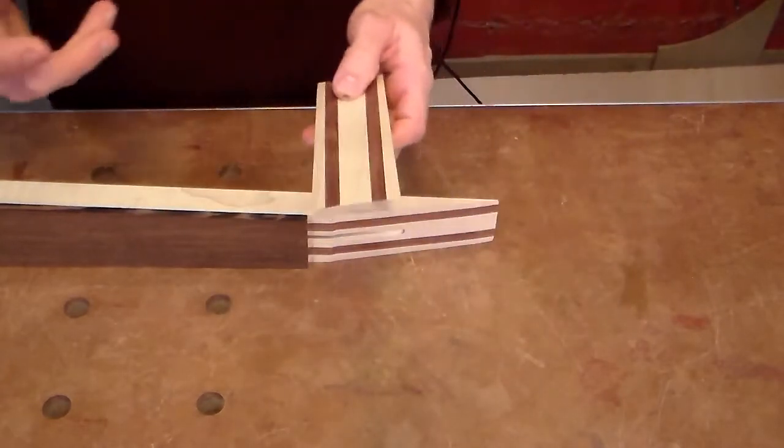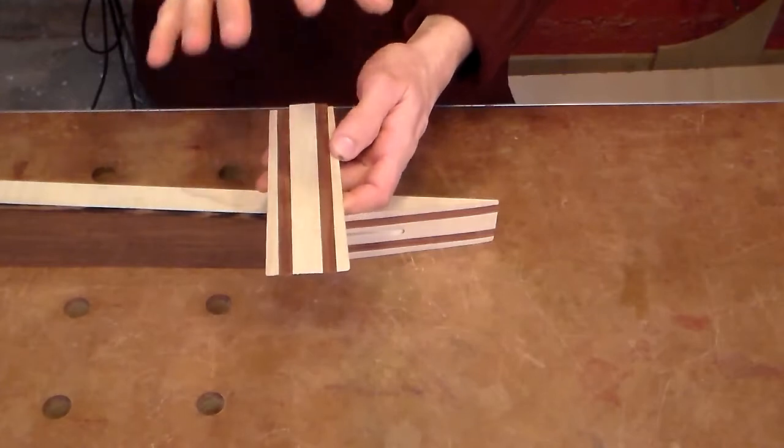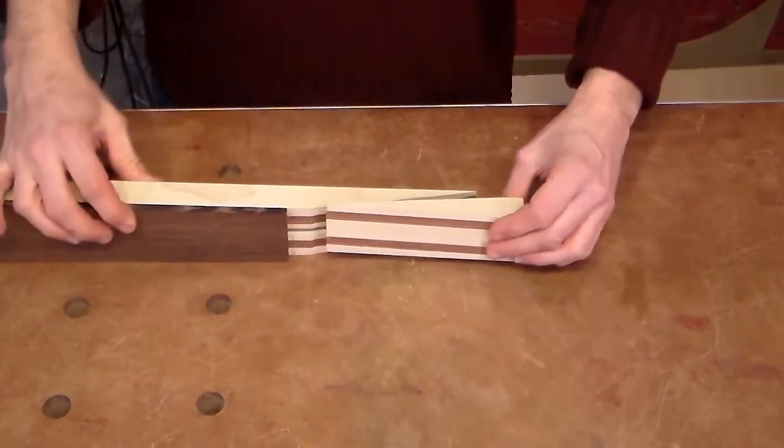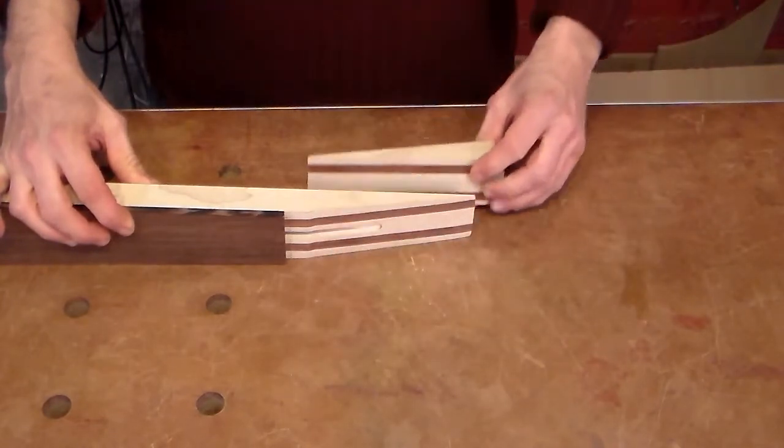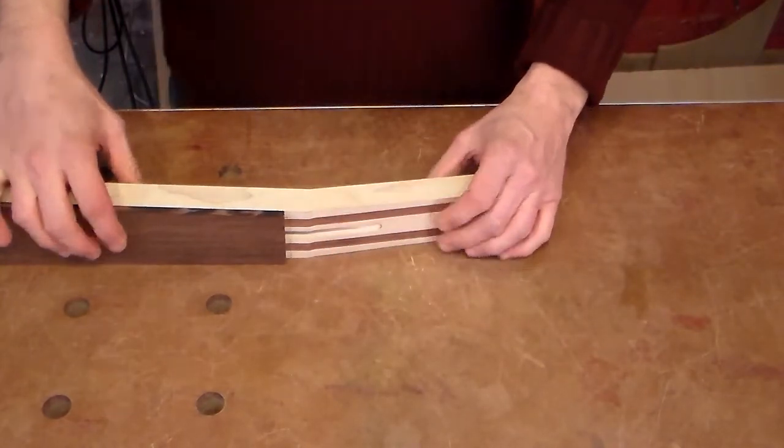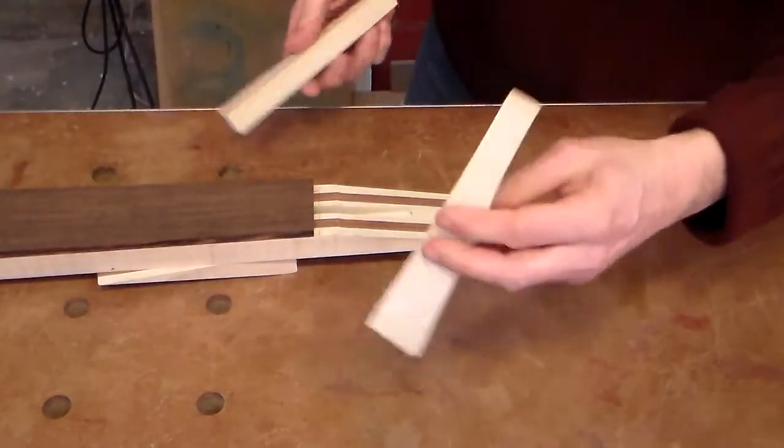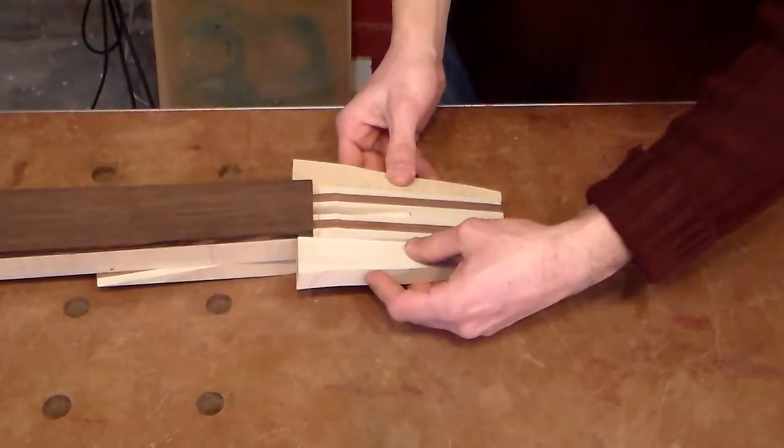Because every time you glue pieces of wood, you get a piece that is stronger than a single piece of wood. So, I am going to take this piece that I cut from here, turn it around like that, and glue it here. And then I am going to add two pieces of wood, of maple in this case, to the sides.